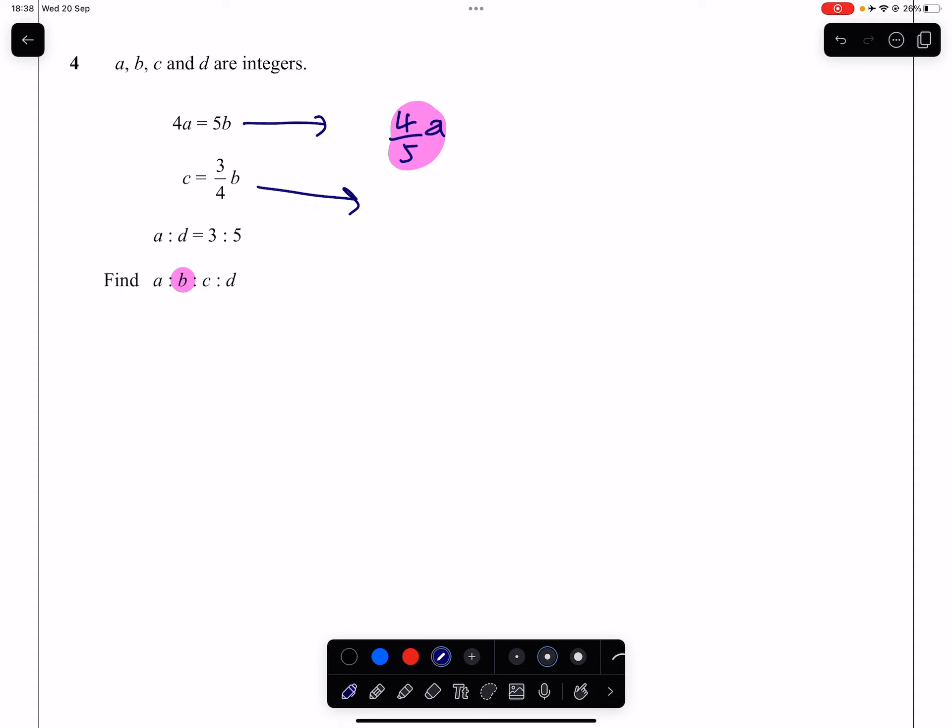This here, C is three-quarters of B, so on the surface it doesn't look like we've got much there. But what I forgot to write here is that B equals four-fifths of A.